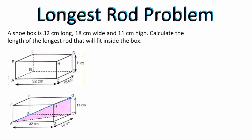To solve this problem I'll use the Pythagorean theorem, since these are right triangles. First I'll work with the rectangle that serves as the base of the box — triangle ADC, where angle D is the right angle. From A to D is 32 centimeters, and from D to C is 18 centimeters. Because this is a right triangle, I can use the Pythagorean theorem.